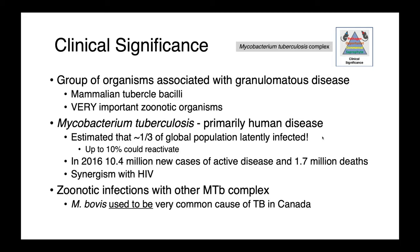Mycobacterium tuberculosis is notorious for its synergism with HIV. Tuberculosis is one of the leading causes of death among people with AIDS, particularly in sub-Saharan Africa. Zoonotic infections can also occur with other mycobacterium tuberculosis complex organisms, and M. bovis used to be a very common cause of tuberculosis in people in Canada. Fortunately, we've nearly eradicated it.